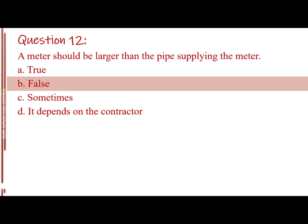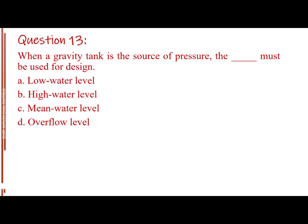Question number 13. When a gravity tank is the source of pressure, the blank must be used for design. Letter A, low water level. Letter B, high water level. Letter C, mean water level. Letter D, overflow level. The answer is letter A, low water level.